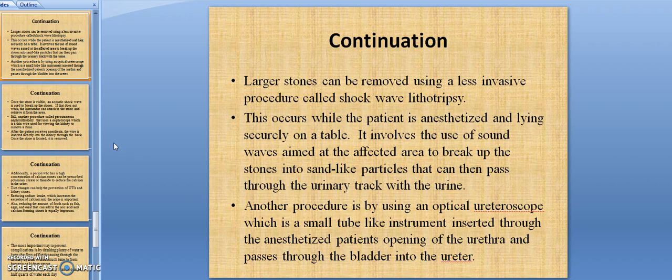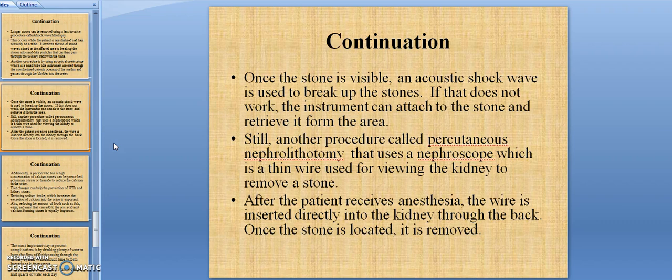Another procedure is by using an optical ureteroscope, which is a small tool-like instrument that is inserted through the patient's opening of the urethra and passes through the bladder into the urinary tract. Once the stone is visible, an acoustic shock wave is used to break up the stone. If that does not work, the instrument can attach to the stone and retrieve it from the area. Still another procedure, called percutaneous nephrolithotomy, uses a nephroscope, which is a thin wire used for viewing the kidney to remove a stone. After the patient receives anesthesia, the wire is inserted directly into the kidney through the back. Once the stone is located, it is removed.